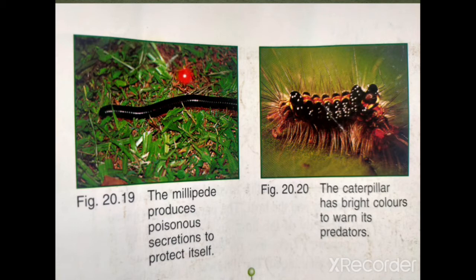Some organisms have poisonous secretions from their body — like millipedes and caterpillars — so that they can keep predators away. The secretions cause itching and blisters on the predators. Similarly, some caterpillars have very bright colors to warn their predators that they are poisonous.